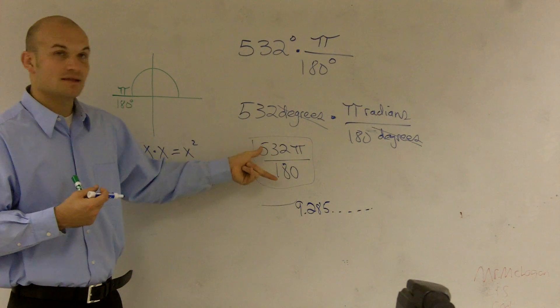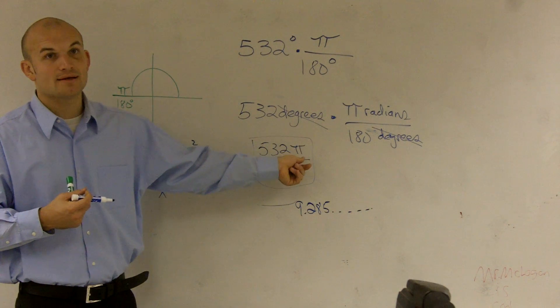So whenever you're finding these in radians, leave it as a fraction and leave your pi out there as well.